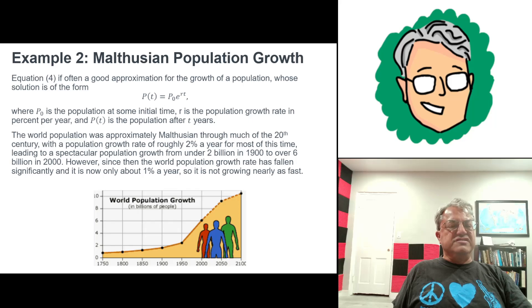In 1900, it was less than 2 billion. But then by 2000, it got over 6 billion. So it over tripled. The world population more than tripled during the 20th century.